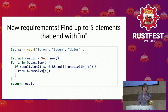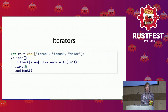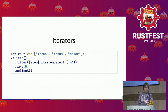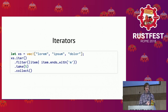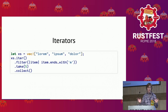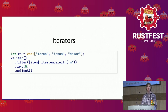The alternative approach is to use iterators. If you've written Rust, you've probably come across iterators because they're very common. The advantage of this code snippet is that the core concepts are right there in the method names: you filter for items that end with an M, you take five of them, and you collect them. I've omitted some type annotations, but this will work in the right context.